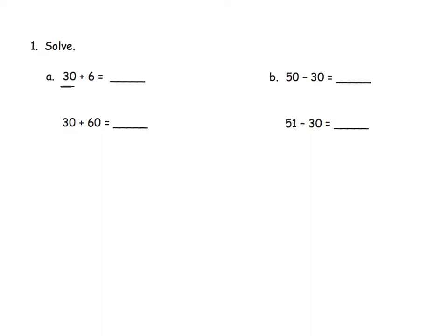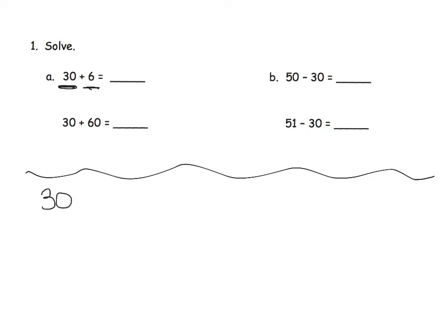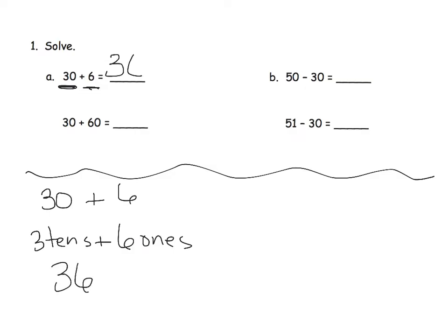This question says thirty plus six. What does thirty mean? Well, thirty means we have three tens, and then plus six means plus six ones. So what's the answer? It's three tens plus six ones, which is written as thirty-six.